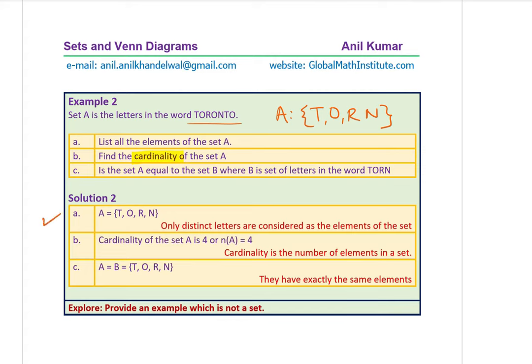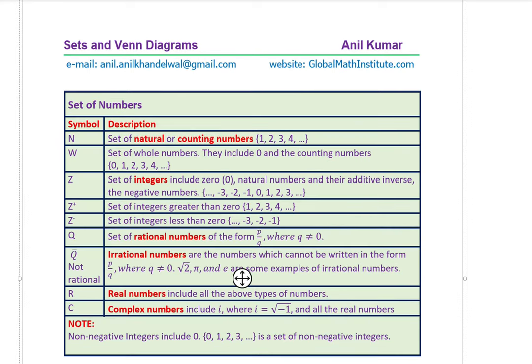Set A has four distinct elements: T, O, R, N. For Part C, set B is the letters in TORN, which gives the same four letters. So yes, set A equals set B — that is true. Sets are equal when they contain exactly the same elements, regardless of order.